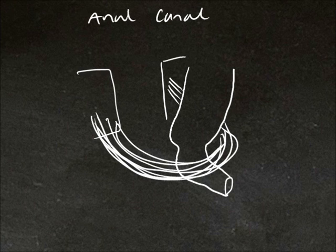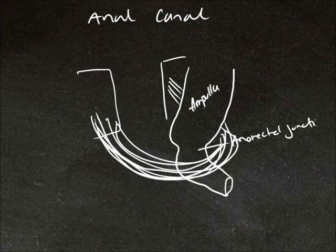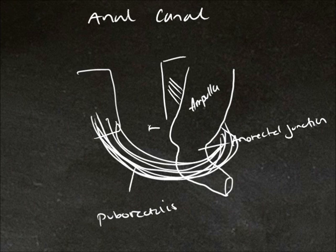Finally, we'll just take a look at how puborectalis forms a sling around the anal canal. Up here we have the ampulla of the rectum. Here where it thins and we get the surrounding of puborectalis is the anorectal junction. And here's puborectalis, and this pulls on the upper part of the anal canal and presses on the upper part of the external sphincter. And this helps with continence.